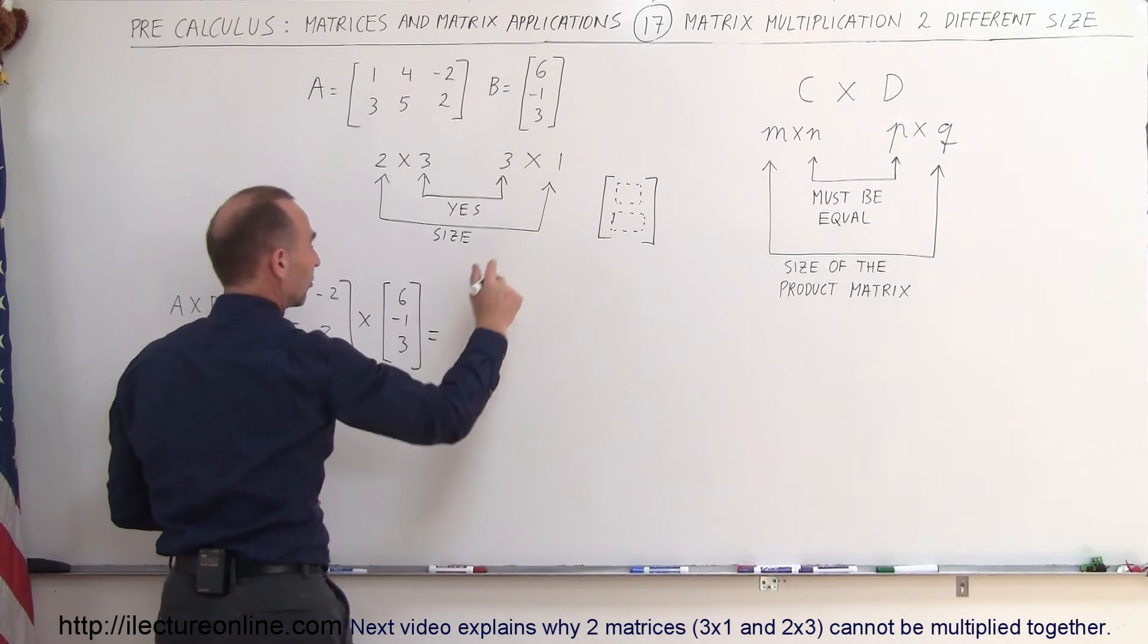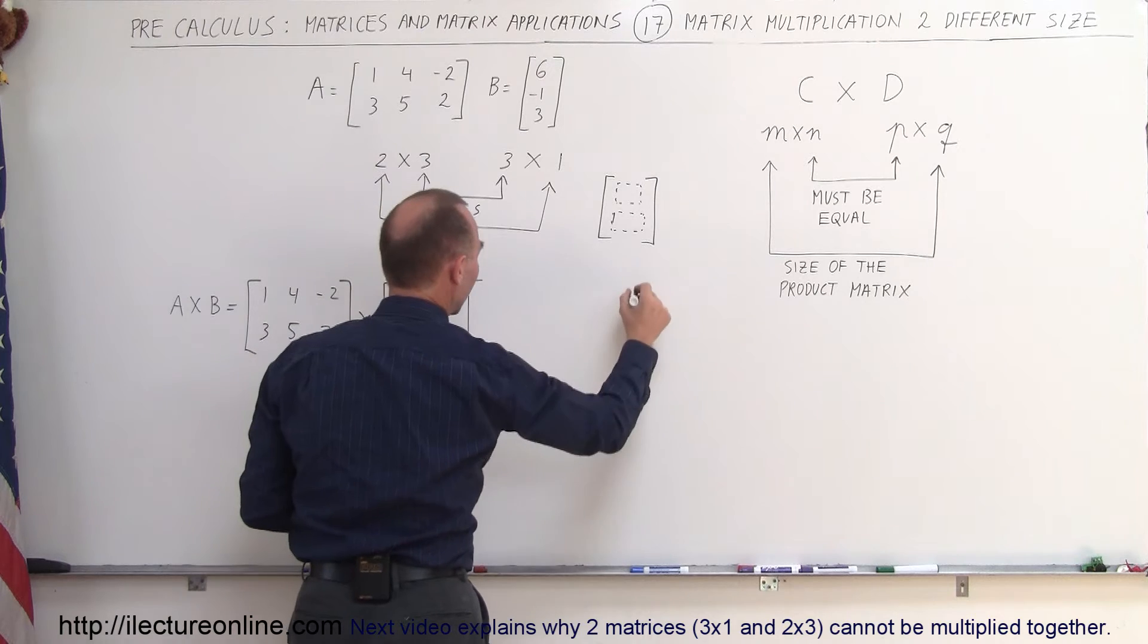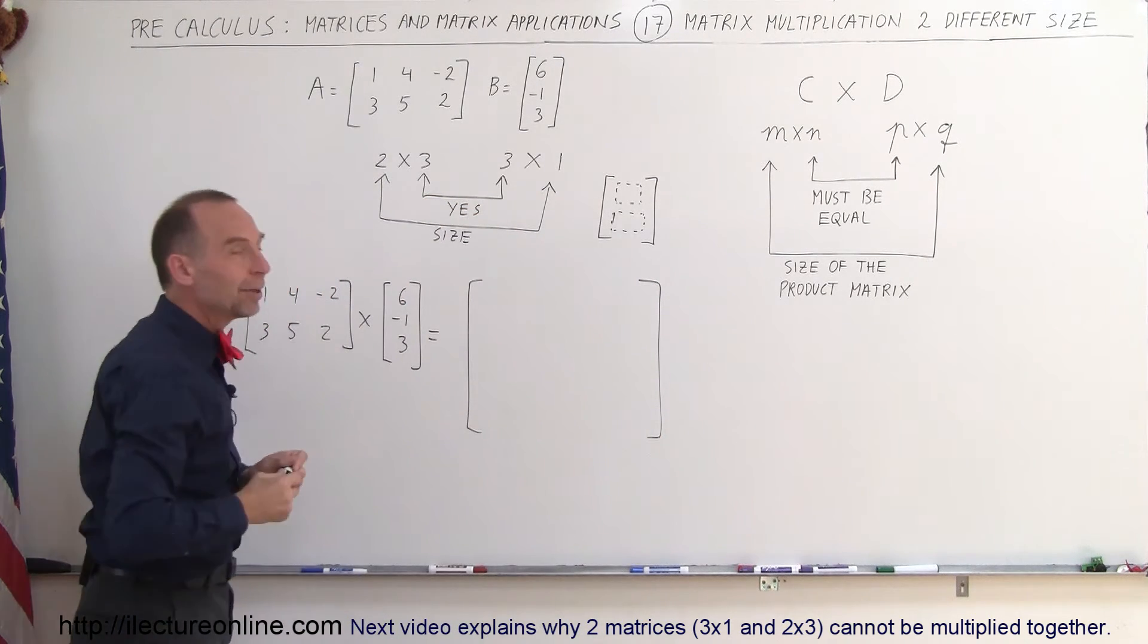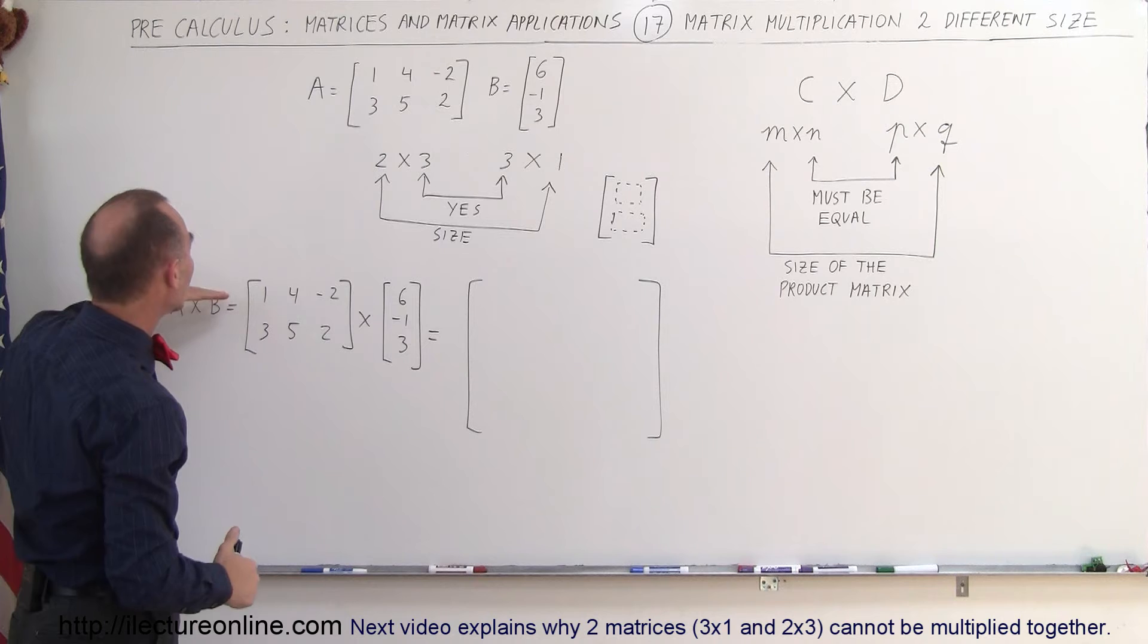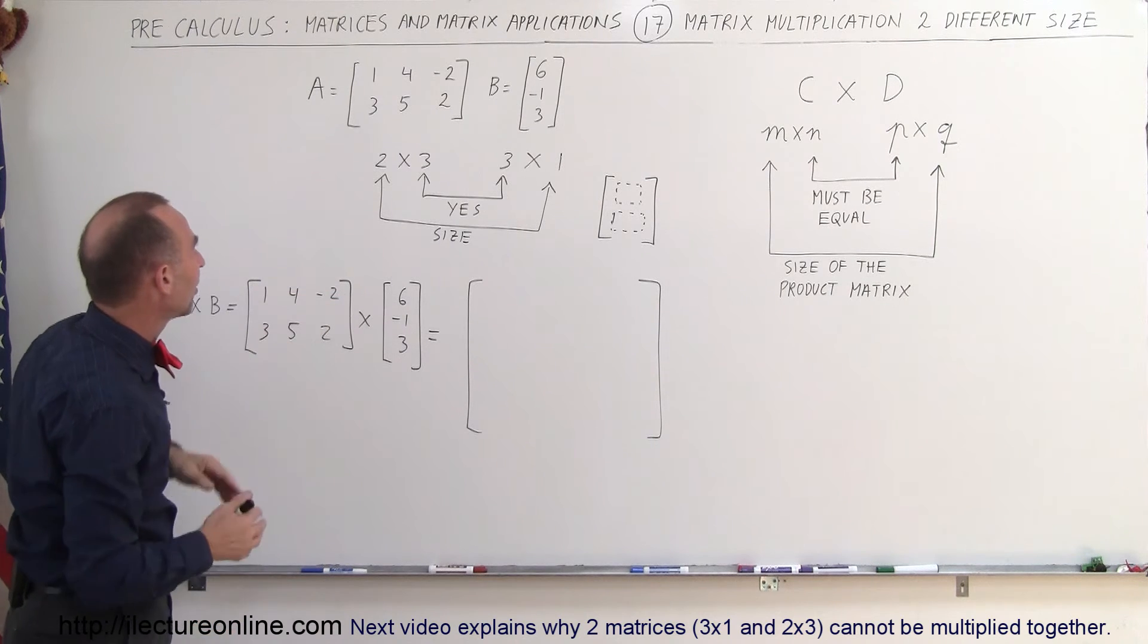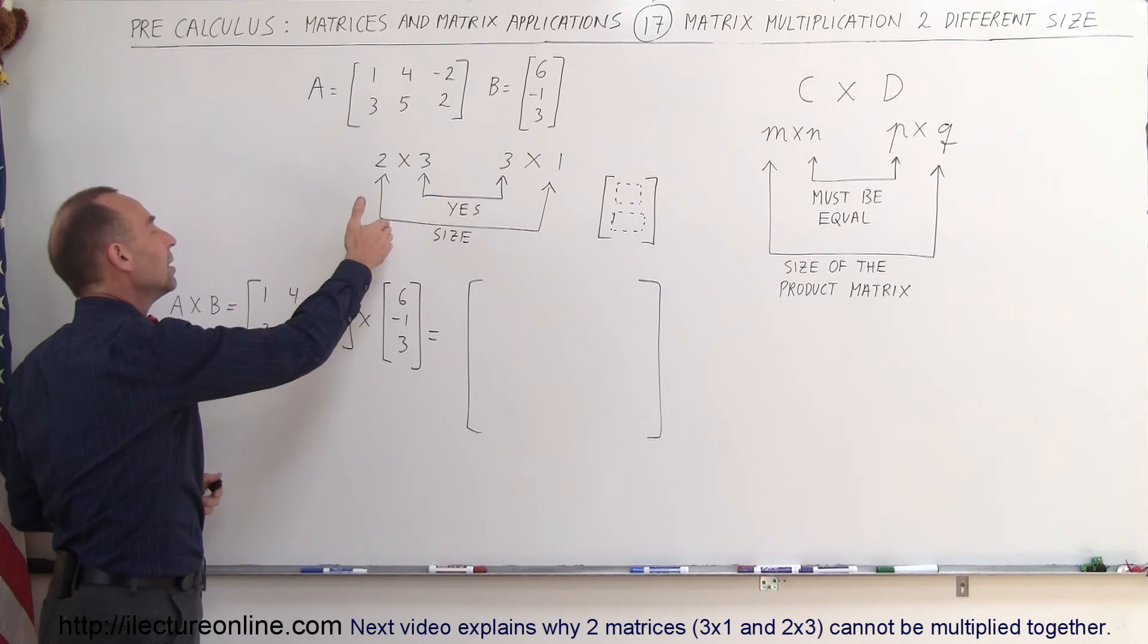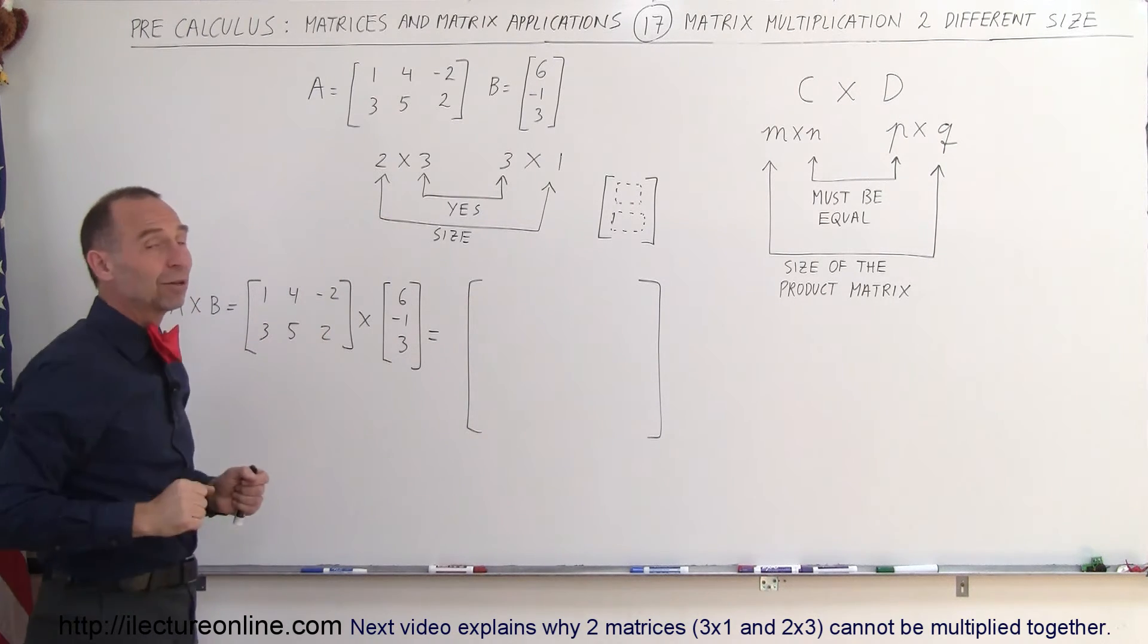So that will result in a matrix looking like that, with just two elements. And the first element can be obtained by taking all the elements of the first row of the first matrix and multiplying times all the elements of the first column in the second matrix.